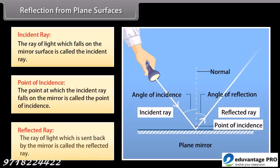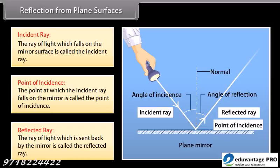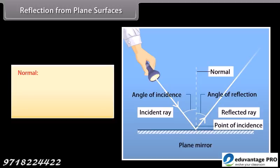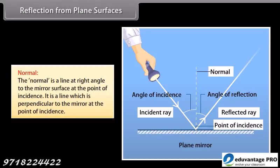Reflected ray: the ray of light which is sent back by the mirror is called the reflected ray. Normal: the normal is a line at right angle to the mirror surface at the point of incidence. It is a line which is perpendicular to the mirror at the point of incidence.